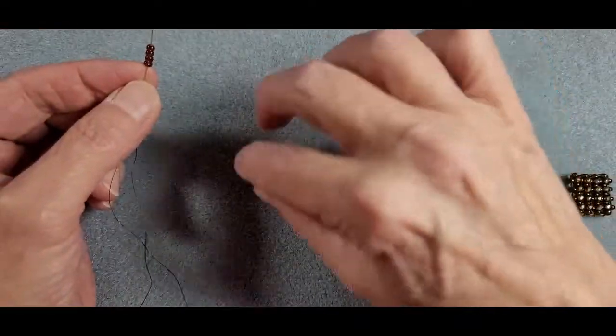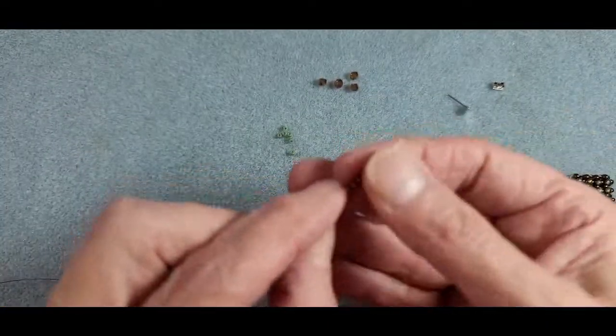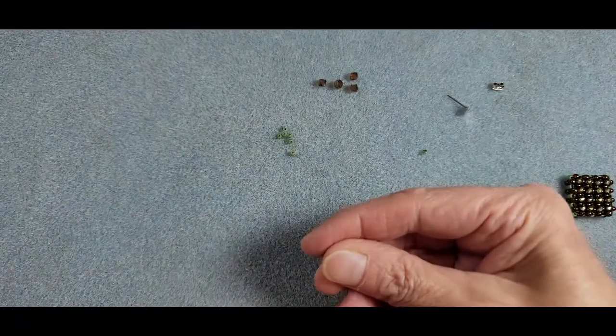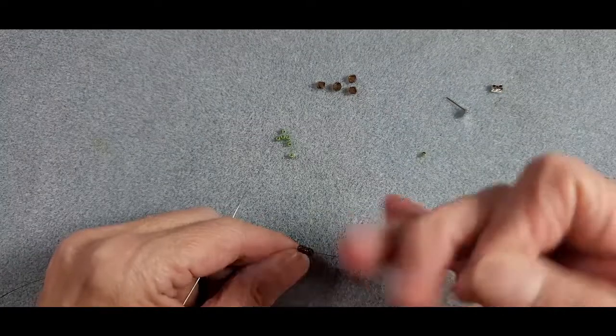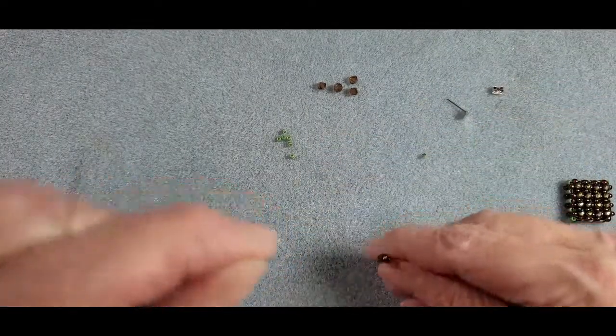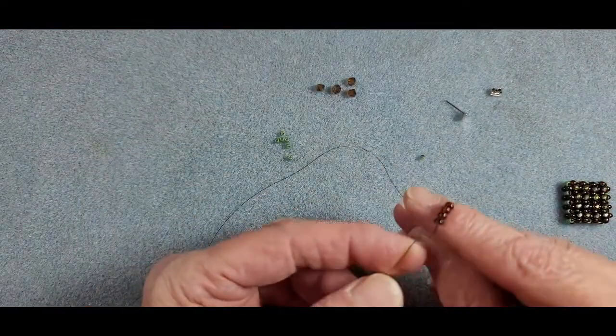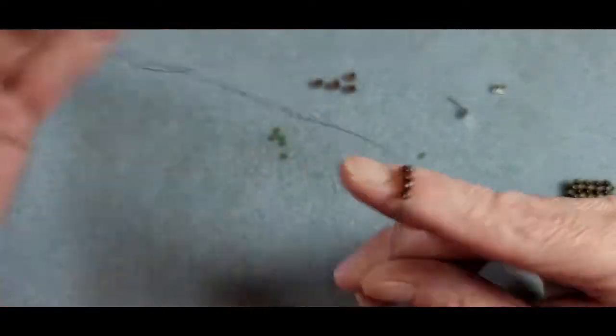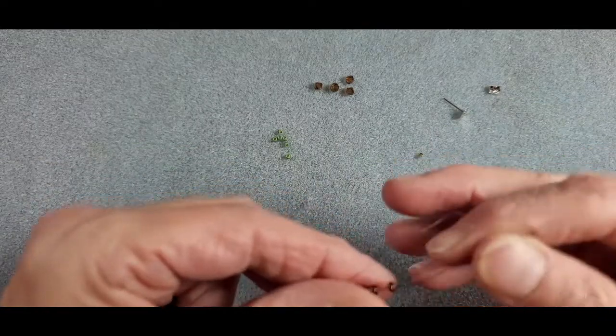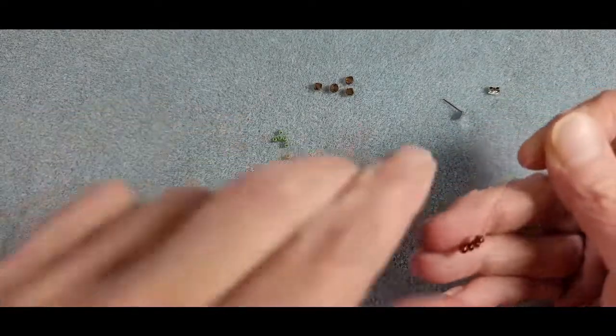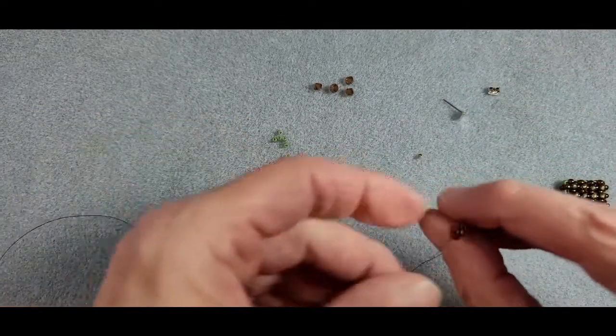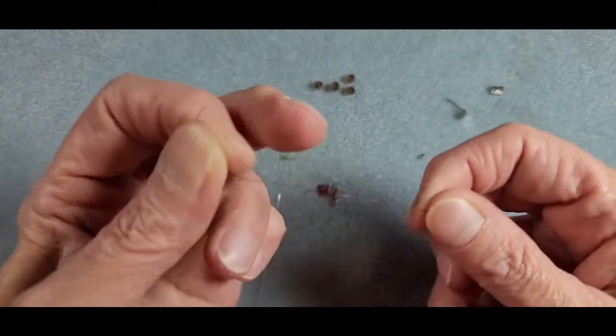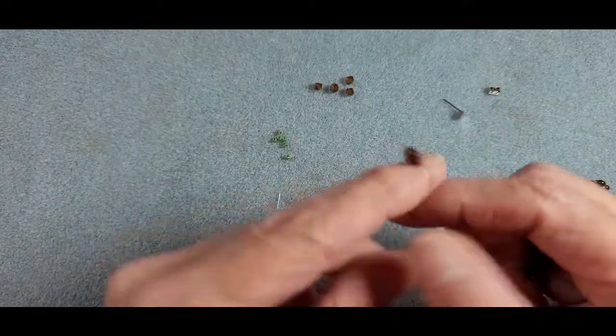So it's very simple what we're going to do. We are going to pick up our four 8-0s, carry them down, leave just enough tail to tie your overhand knots. I'm going to pass through those beads again to form a loop. And once I get my loop formed I'm going to go ahead and tie this tail thread off by doing two overhand knots.